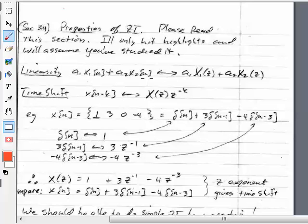And then we add them all together, again, because of linearity. So X(Z), Z-transform of that is 1 plus 3Z to the minus 1 minus 4Z to the minus 3.